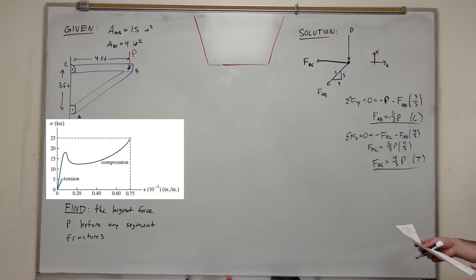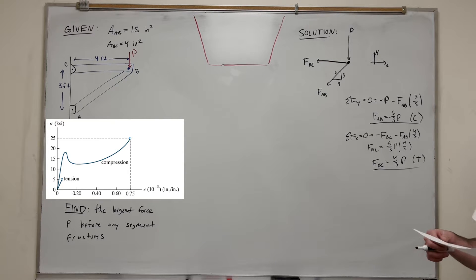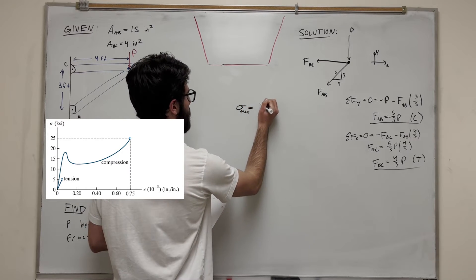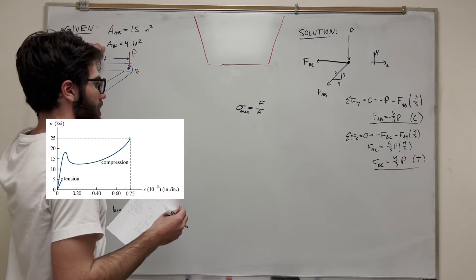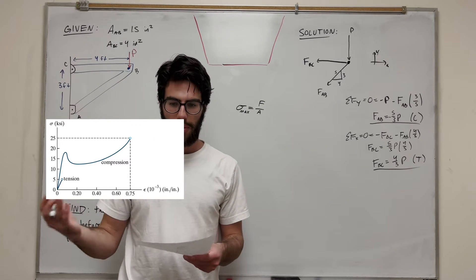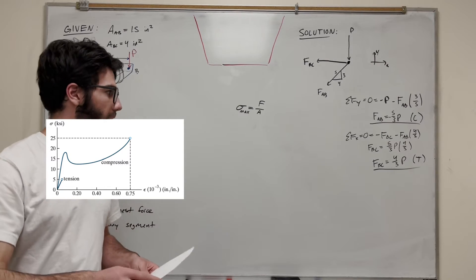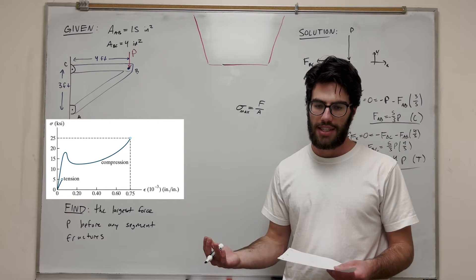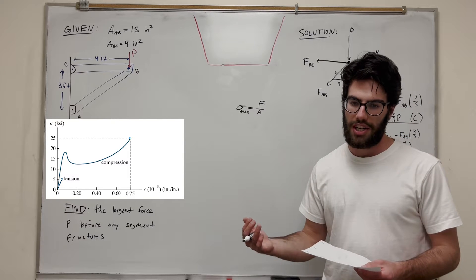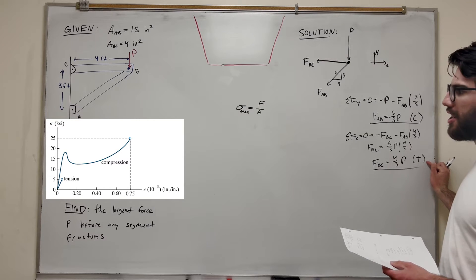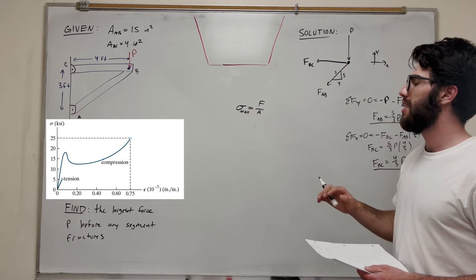So we've found our two forces relative to P. Now we need to find the normal stress and see which one breaks first. The equation for normal stress max is just force over area. We're given the areas for both segments and we know the forces in terms of P. We need to look at our stress-strain diagram: in tension it can go up to 5 KSI before breaking, but in compression it can go up to 25 KSI before it breaks. So depending on whether we're in compression or tension, we use a different maximum value.